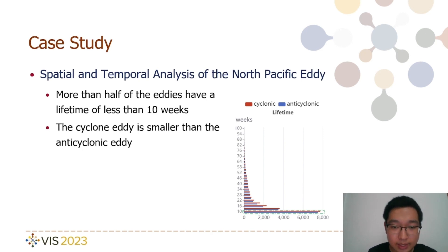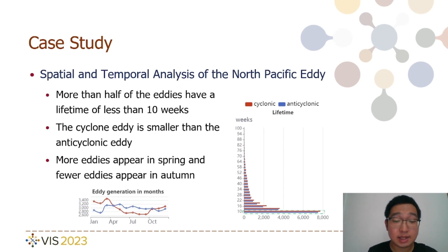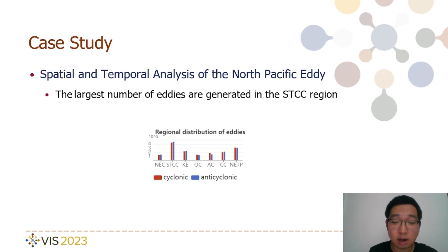Furthermore, the analysis indicated that cyclonic eddies tended to have a smaller area radius compared to the anti-cyclonic eddies. When analyzing the North Pacific Ocean dataset from a seasonal perspective, experts observed that significant seasonal variations in eddy generation. Specifically, they noted that more eddies tend to appear during the spring season, while fewer eddies are observed during the autumn season. Furthermore, the analysis of the identified and tracked eddies in various regions of the North Pacific Ocean revealed that the highest number of eddies are generated in the STCC region. Based on this findings and further analysis of the flow field, experts suggest that these eddies are likely a result of the interaction between wind stress and ocean currents in this specific area.